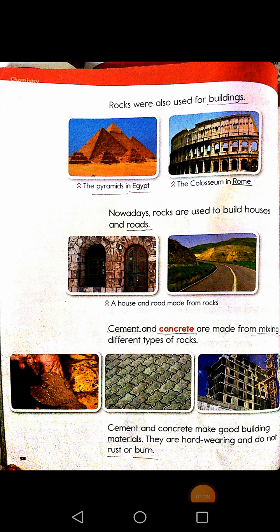Rocks were also used for buildings. For example, the pyramids in Egypt and the Colosseum in Rome. Nowadays, rocks are used to build houses and doors. Look at this picture — a house and door made from rocks.